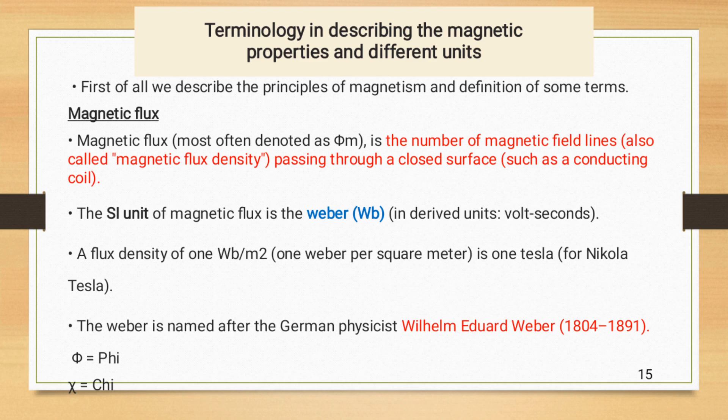Terminology in describing the magnetic properties and different units. First of all, we describe the principles of magnetism and definition of some terms. First is magnetic flux. Magnetic flux, most often denoted as Φ_M, is the number of magnetic field lines passing through a closed surface such as conducting coil. The SI unit of magnetic flux is the Weber, WB. In derived unit, it is volt second.